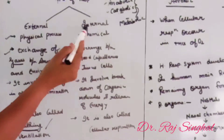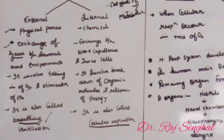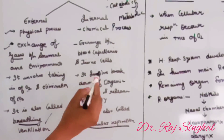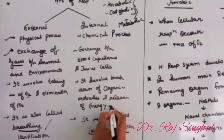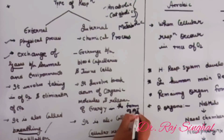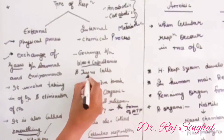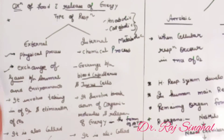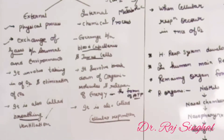The second type is internal respiration, also known as cellular respiration. It is a chemical process which involves the breakdown of organic molecules along with the release of energy in the form of ATP. ATP is the energy currency. In this, the exchange occurs between the blood capillaries and the tissue cells. Thus, the two types of respiration are external and internal, also known as breathing or ventilation and cellular respiration.